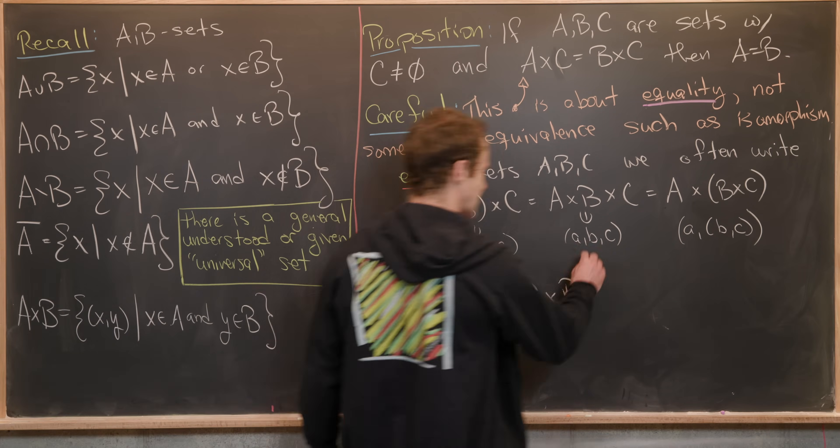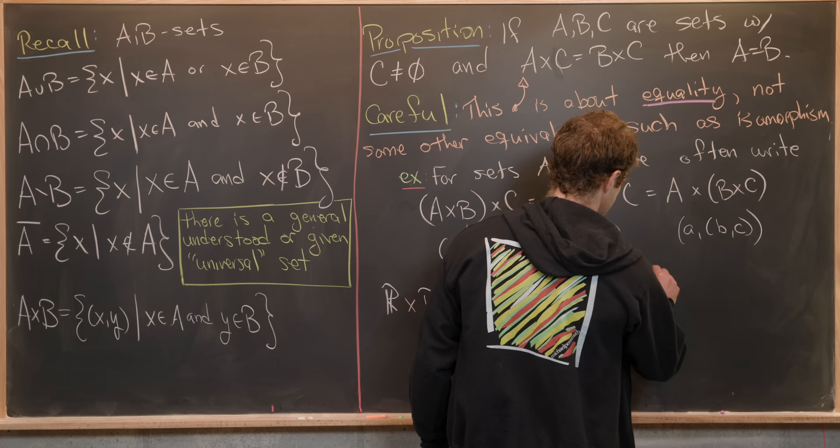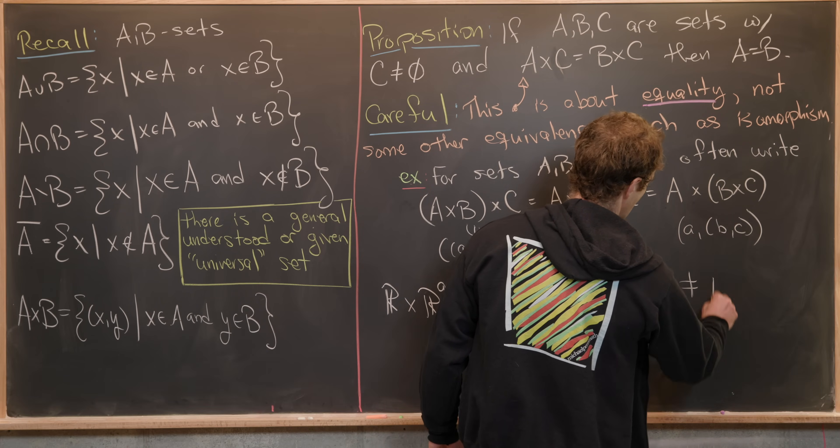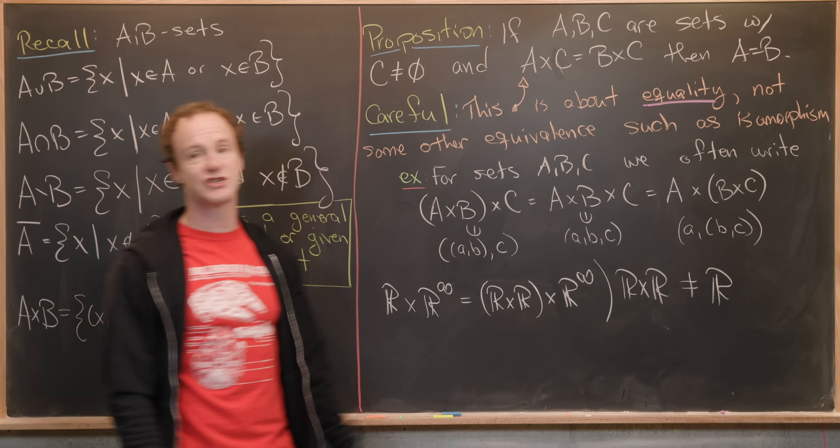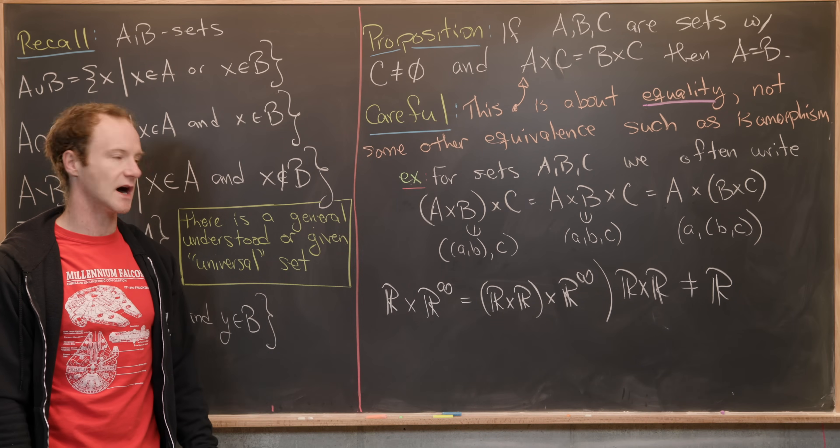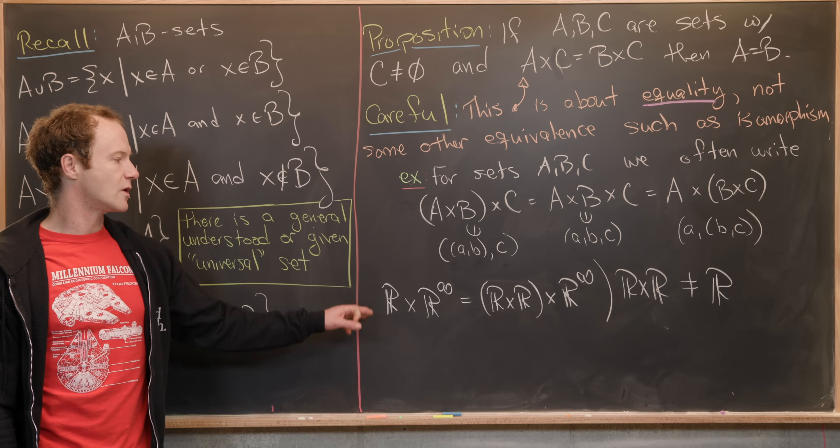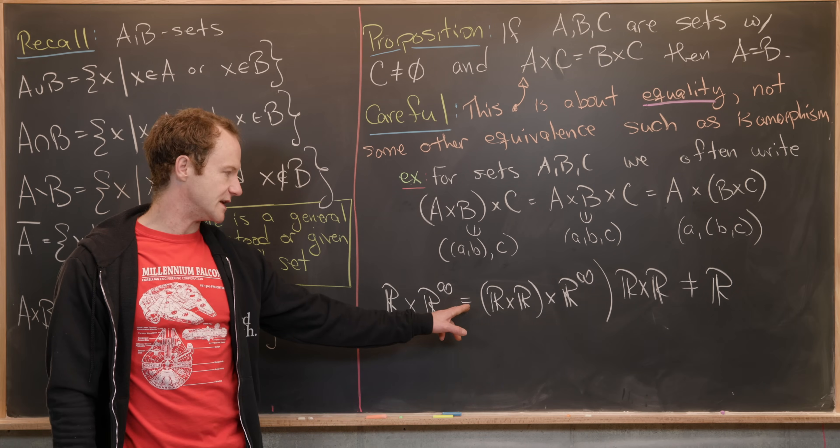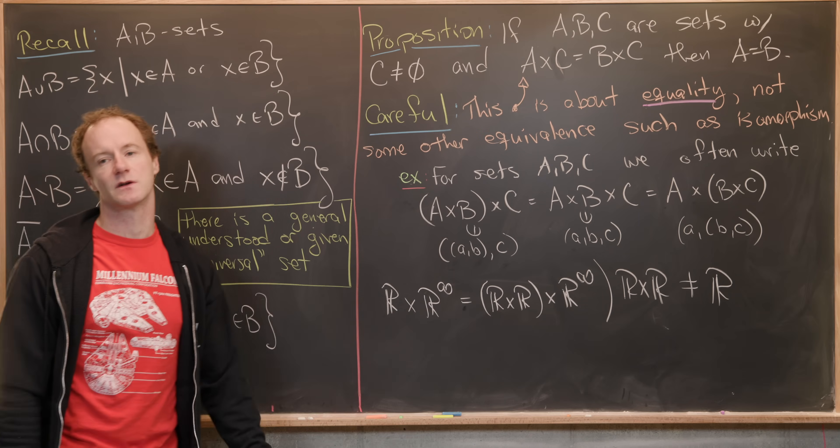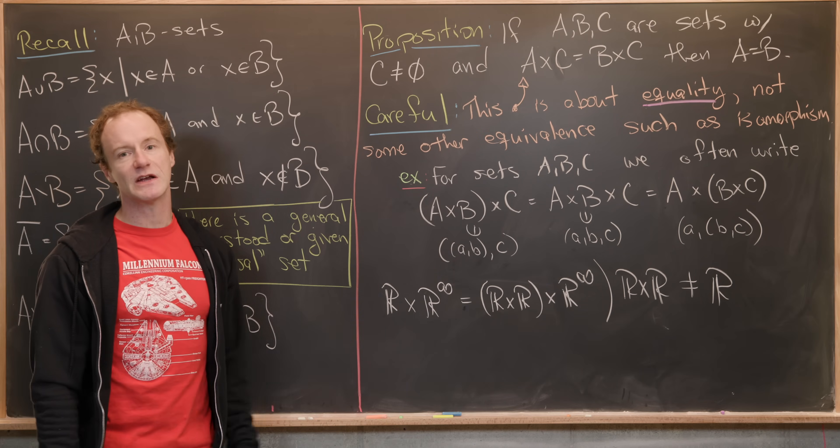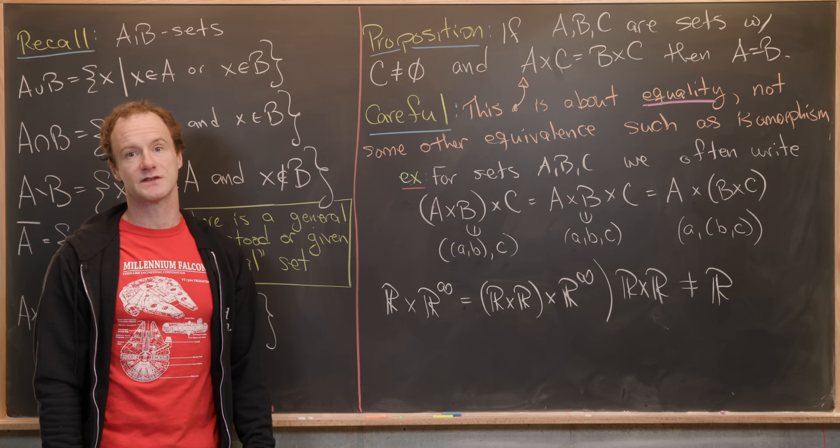We can cook up an example pretty quickly. Let's look at R cross R infinity, whereby R infinity I mean infinitely many copies of R cross-producted with themselves. Notice that's going to be the same thing as R cross R cross R infinity. Here we've got infinitely many plus one copies of R, here infinitely many plus two copies, but those are exactly the same. But notice that here we have R cross R is not equal to R. The Cartesian product of R and R is clearly not the same thing as one copy of R. So that's where this equality is really misused a little bit.